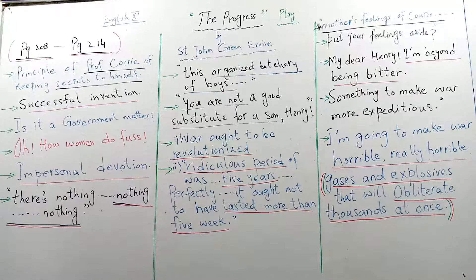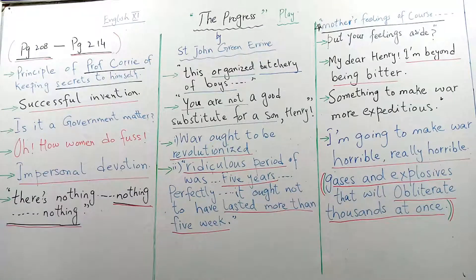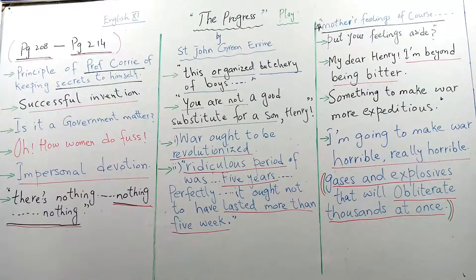Corley says: 'I should think it is. I shall offer it first to the British government of course, but if they won't pay my price, I will offer it to somebody else.' Again, he has no concern about how many deaths his weapon will cause or how much destruction. He says: 'I can take care of myself — when they hear what my invention is, they will jump at it.' Mrs. Meldon asks: 'Will they?' Corley replies: 'Of course, though you are quite justified in feeling skeptical. It was very hard to get them to use tanks in the war — those Cavalry Generals ought to be horse knackers instead of soldiers.'